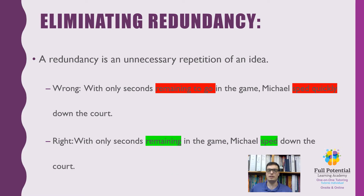Eliminating redundancy. A redundancy is the unneeded repetition of an idea. We see this with the modifiers below: 'With only seconds remaining to go, Michael sped quickly down the court.' This is redundant because we don't need those extra modifiers in the sentence. So we trim it down to correct it: 'With only seconds remaining, Michael sped down the court.' By trimming down on modifiers, we correct the sentence so that it reads correctly.